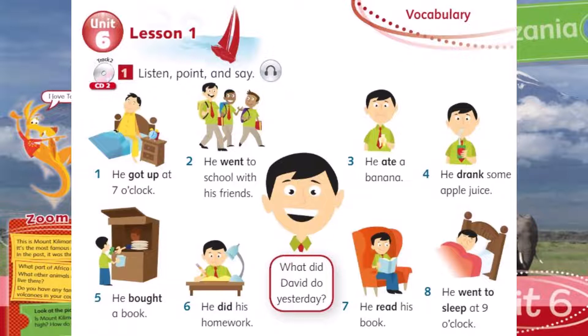Four: he drank some apple juice. Five: he bought a book. Six: he did his homework.